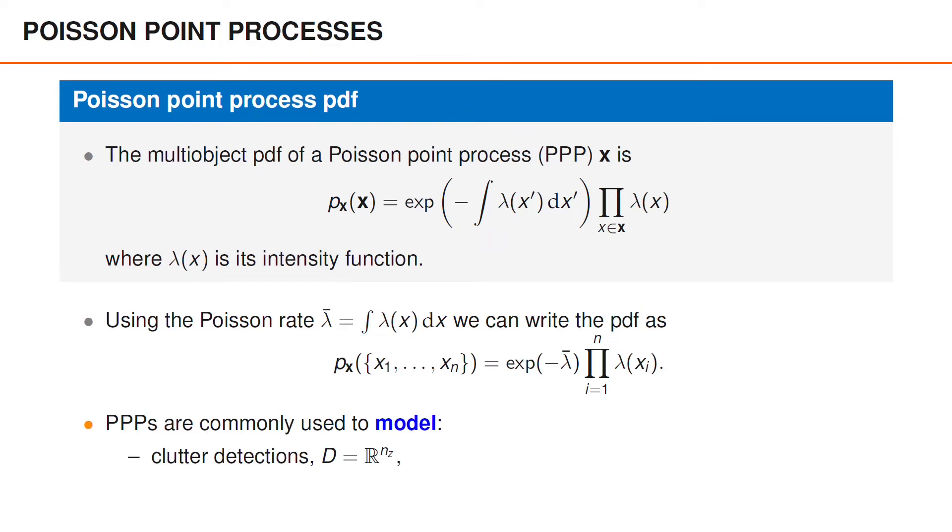Poisson point processes are often used to model various different variables in multi-object tracking. For instance, we have already used it to model false detections and clutter detections, and it is the only model for this that we consider in this course. From now on, we also use it extensively to model the appearance of new objects in the prediction step. It is also commonly used to model the set of object measurements that we observe from an extended object, but we only touch upon this briefly in this course.